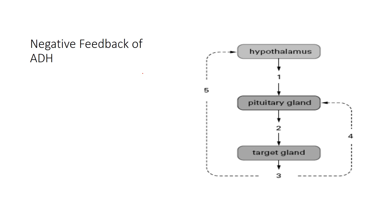We're going to look at the normal mechanism for the release of ADH, and then we'll see how we shut that system off once ADH accomplishes its job. So first: body dehydrated, not enough water in the blood, blood pressure down, not drinking enough water — we're dehydrated. This is the system that's initiated when our body is dehydrated. The hypothalamus is the detector of this.